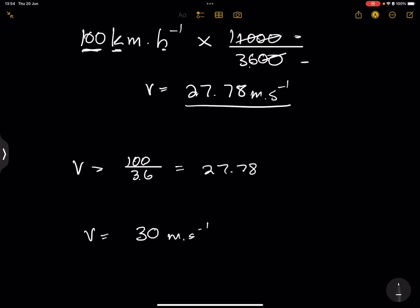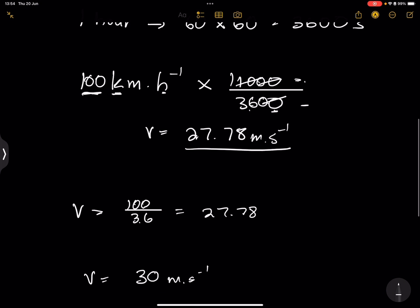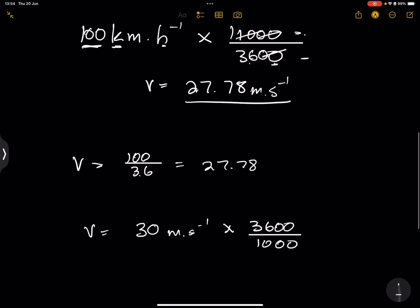Whereas here, we multiplied by 1,000, we would divide by 1,000. Whereas we divided by 3,600, we're going to multiply by 3,600. So what it simply means is that we're going to say, multiply by 3,600, divide by 1,000. So we are actually multiplying by the inverse.